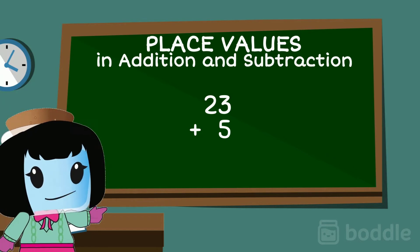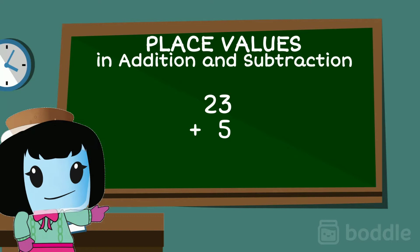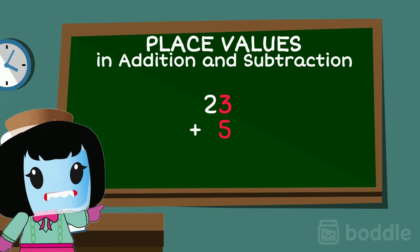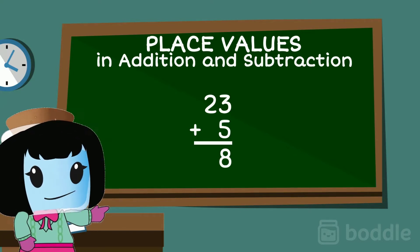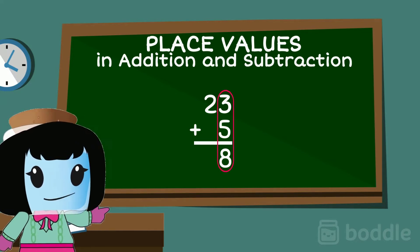Then we can proceed with adding. Starting with the ones place, 3 plus 5 equals 8. Make sure that you line it up, the sum in the ones place.